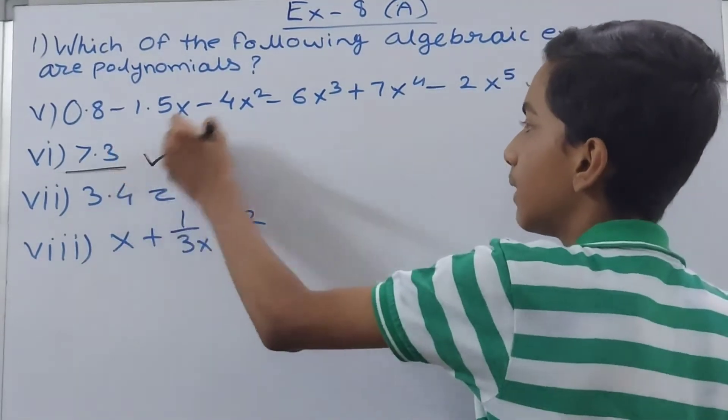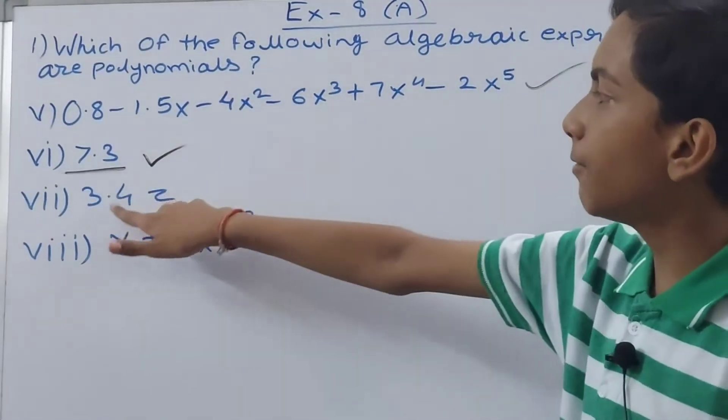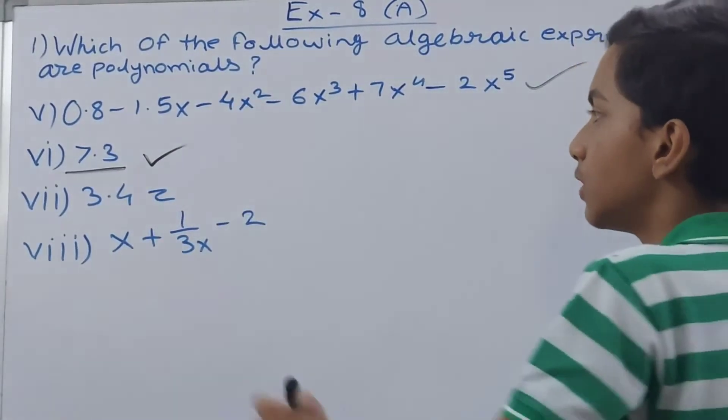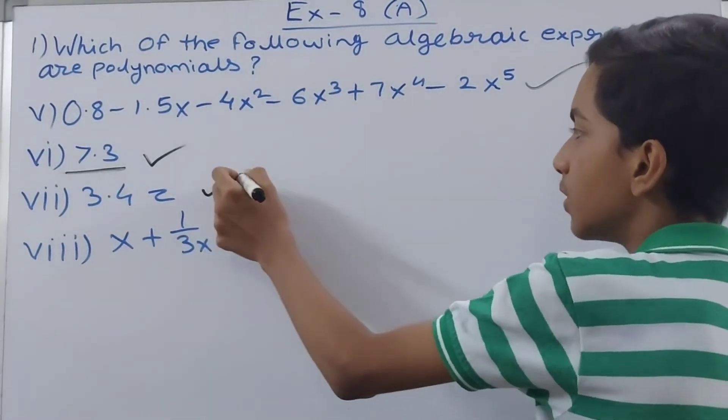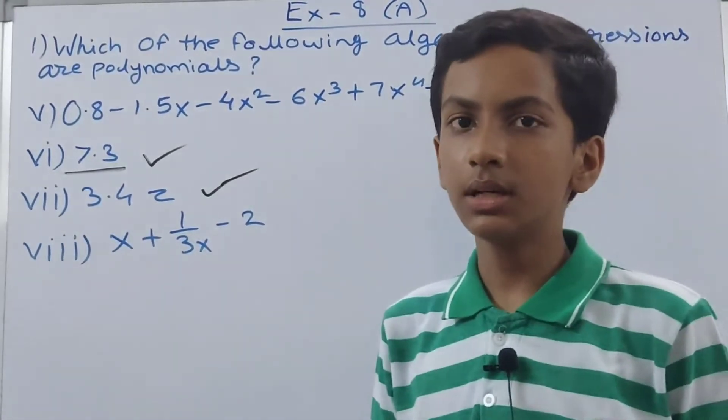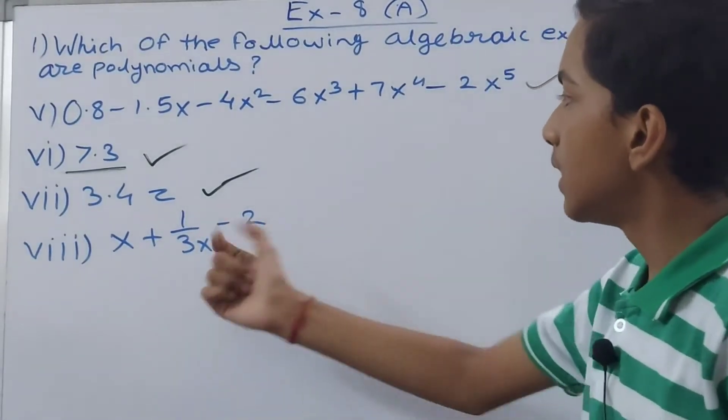Here we have 3.4z, so this one is also a polynomial because there is a variable and it is not being used in the place of the denominator.